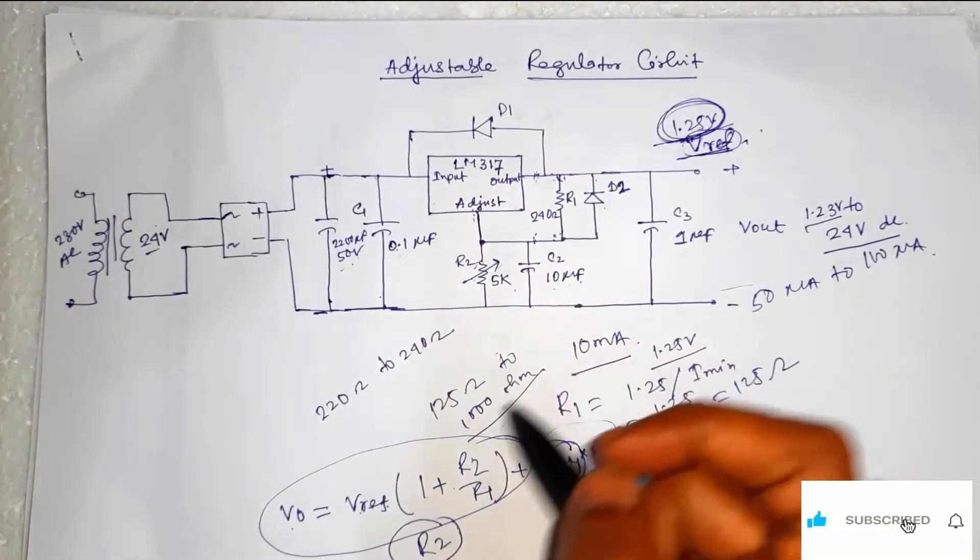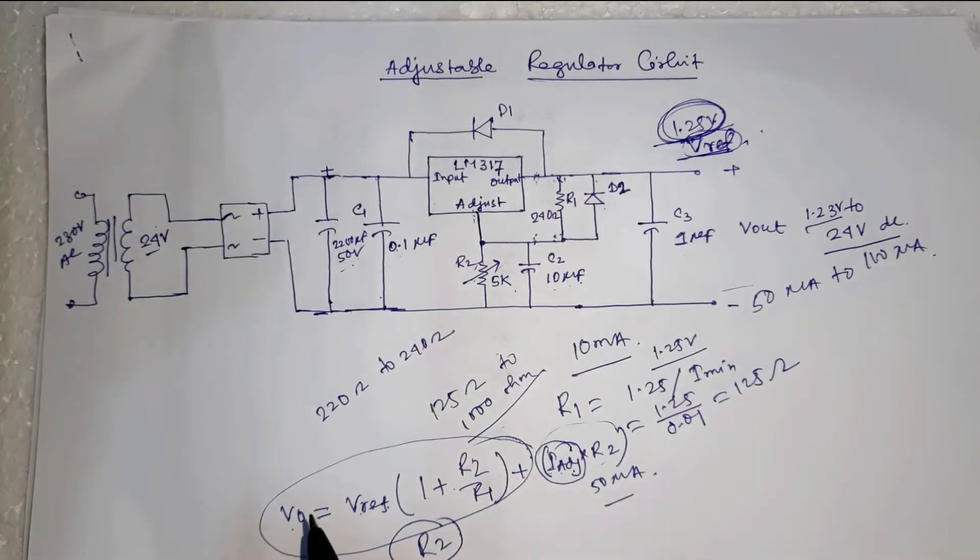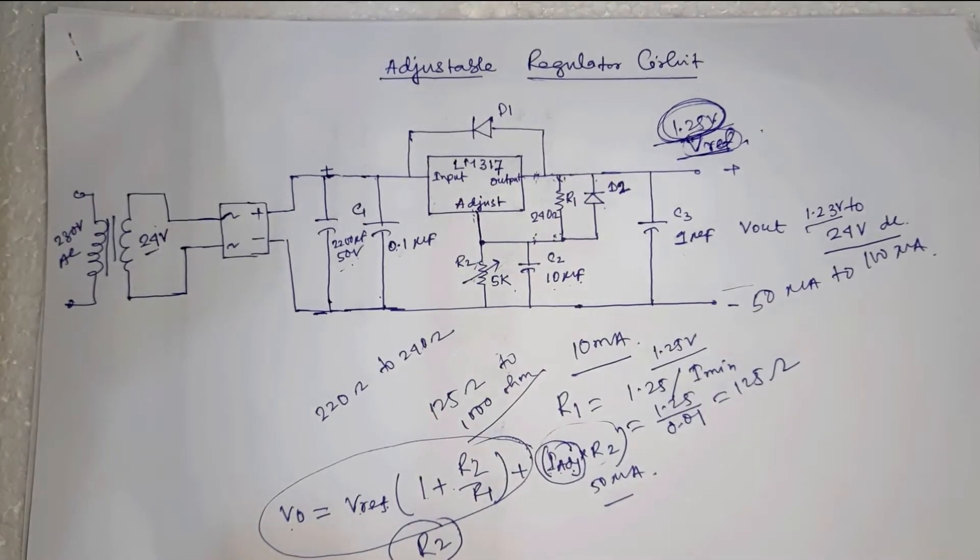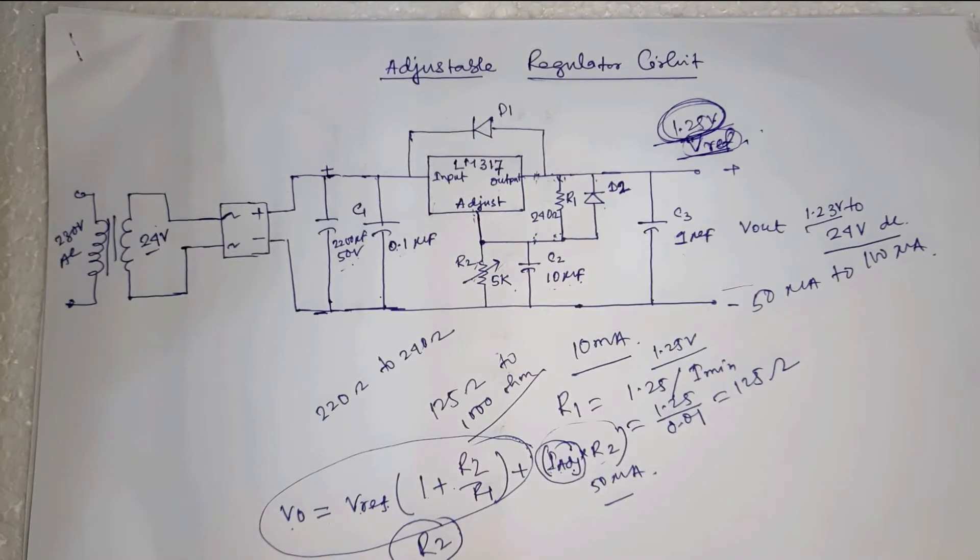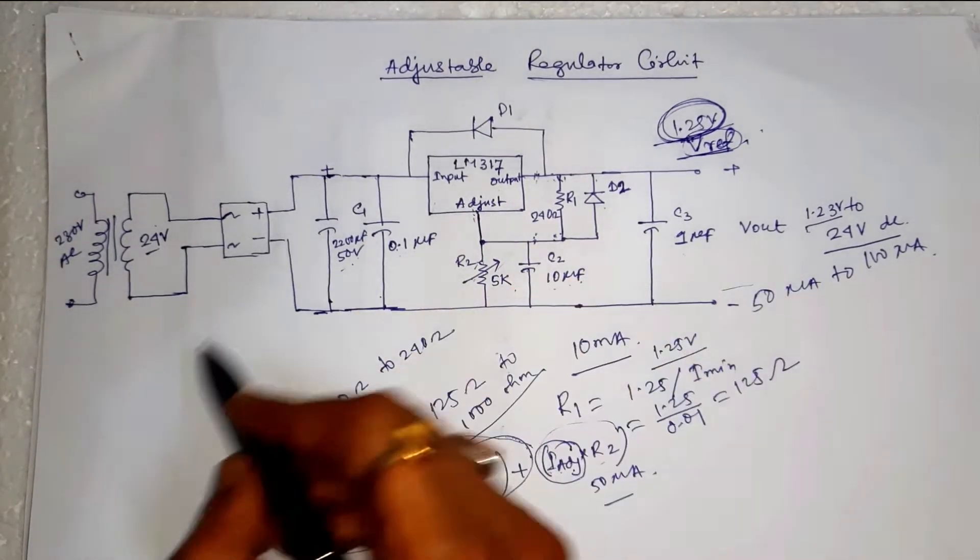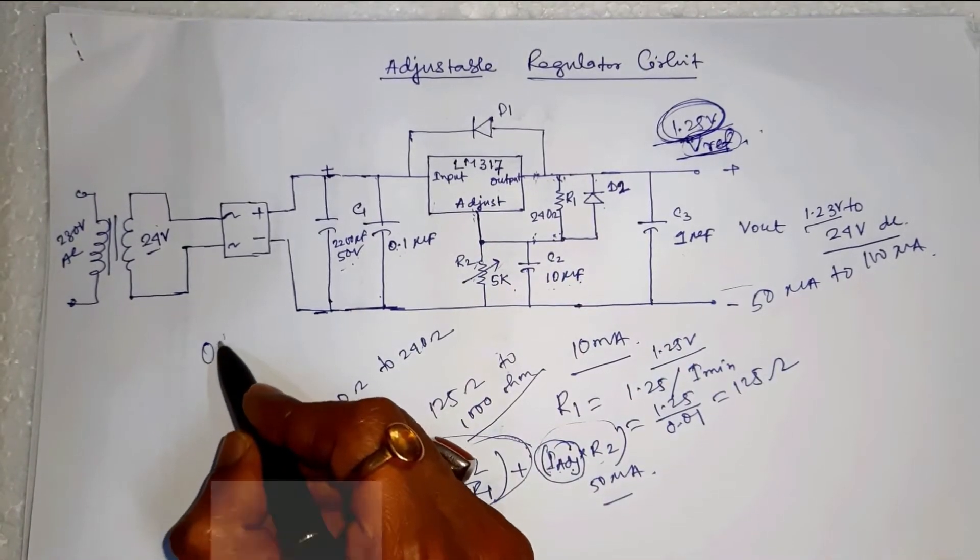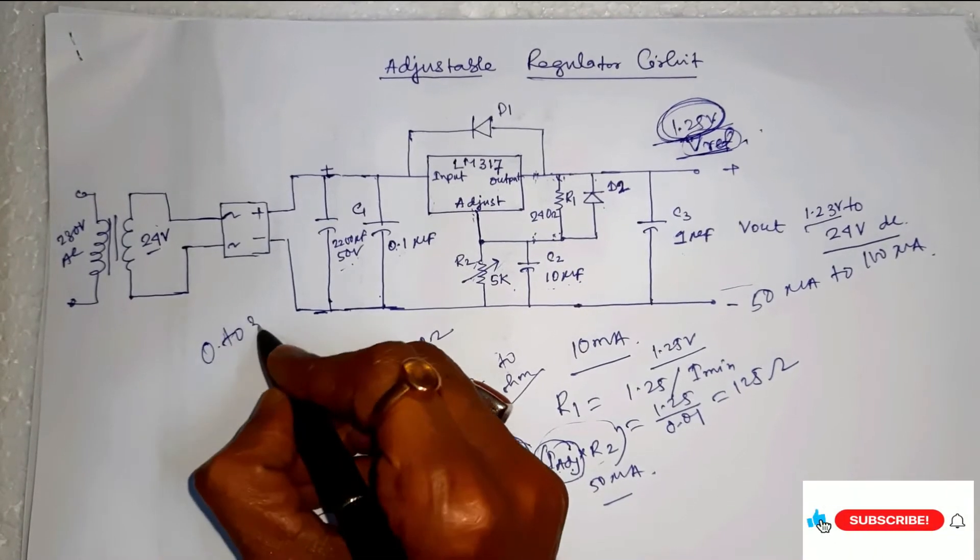Here, main problem is that we cannot vary the voltage from 0 to 37 volt.